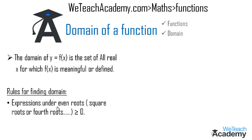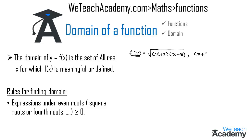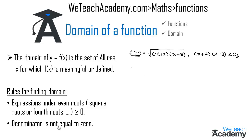The expressions under even roots — square roots or fourth roots — must be greater than or equal to zero. For example, f(x) = √((x+2)(x-3)) is defined only when (x+2)(x-3) ≥ 0. Also, the denominator of a function must not be equal to zero.